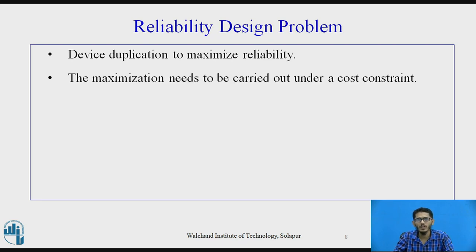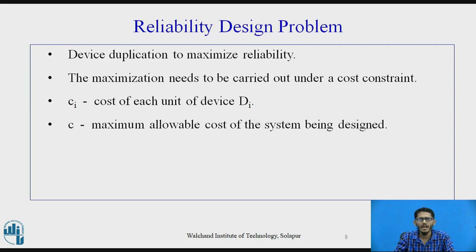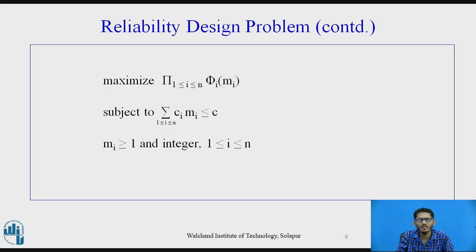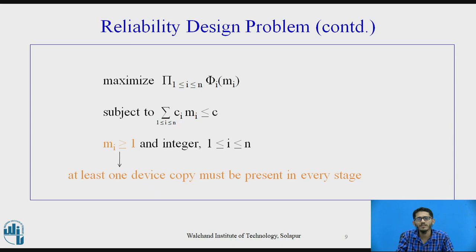The maximization needs to be carried out under a cost constraint. Let ci be the cost of each unit of device di, and c be the maximum allowable cost of the system. The problem is to maximize the product of φi(mi) for i from 1 to n, subject to the constraint that the summation of ci·mi for i from 1 to n is less than or equal to c, where mi is always greater than or equal to 1 and integer — meaning at least one device copy must be present in every stage.